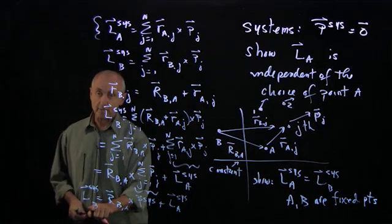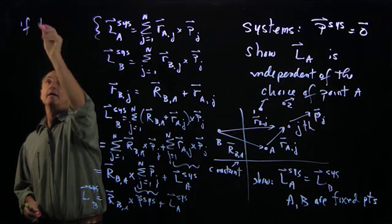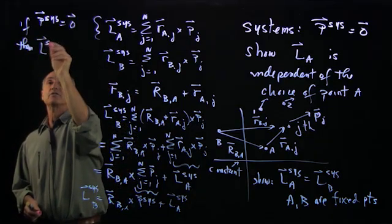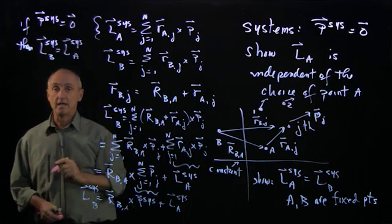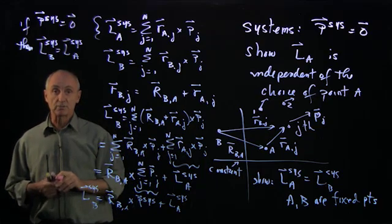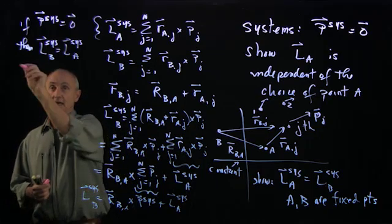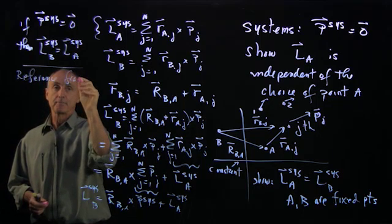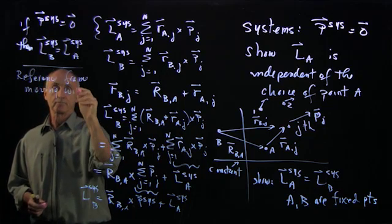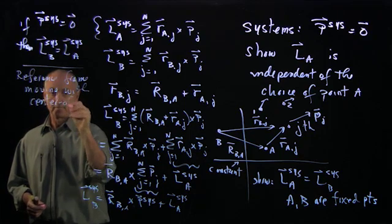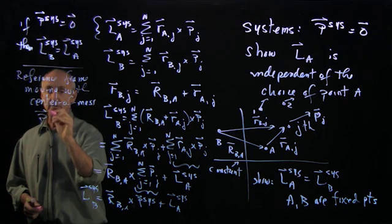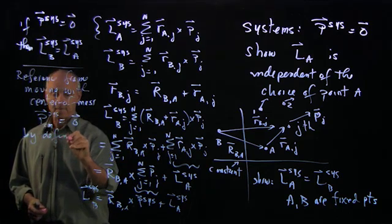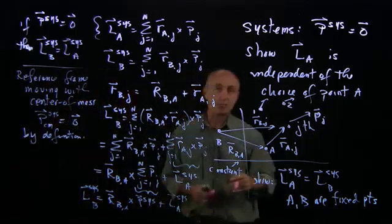That is our general result for how angular momentum can differ between two points. But now, if p_system equals 0, the first term vanishes, and L of the system about B equals L of the system about A. We've proved our proposition: if the total momentum of the system is 0, then the angular momentum doesn't depend on the point we choose.